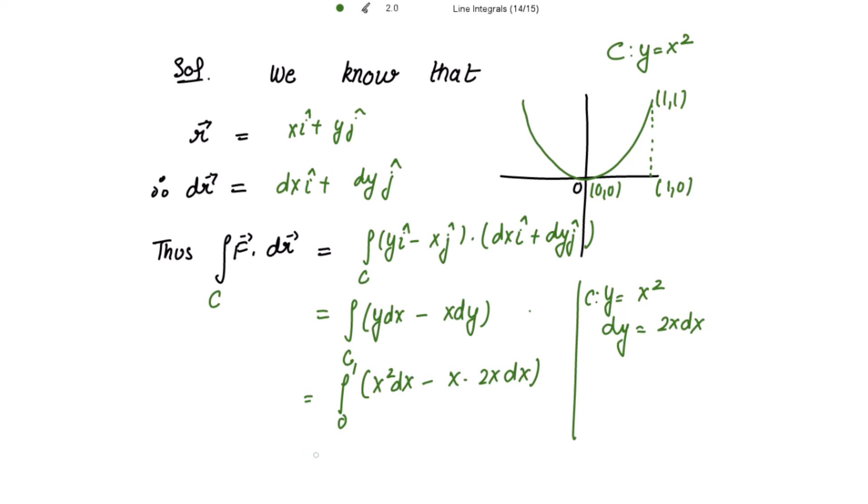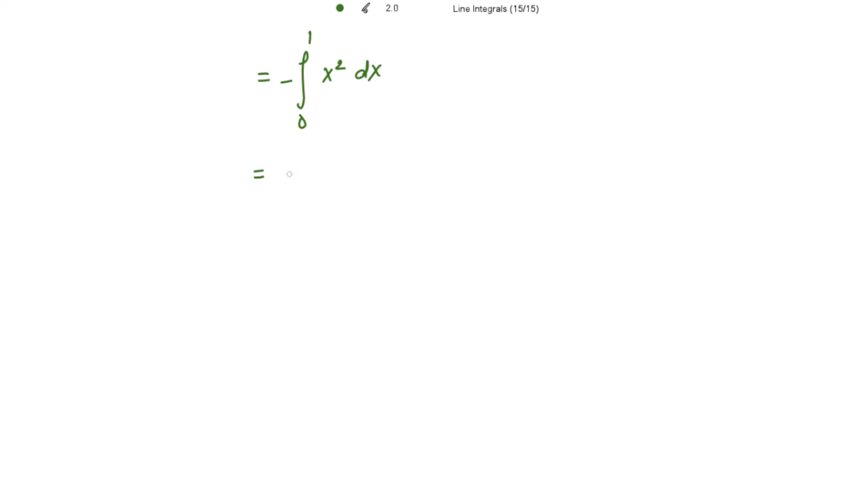This becomes integration from 0 to 1: x square minus 2x square dx, which becomes negative x square dx. The integral of x square is x cube over 3 with limits from 0 to 1. This is negative of 1 over 3 minus 0, that is equal to negative 1 over 3. This is the required answer.